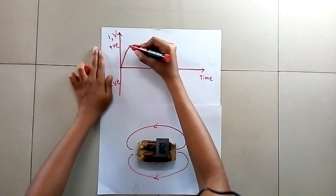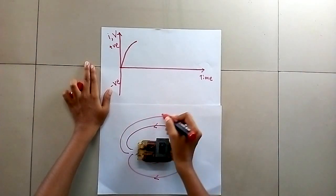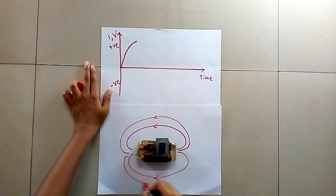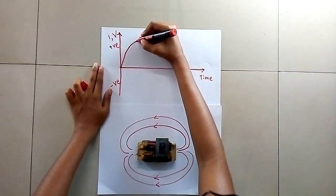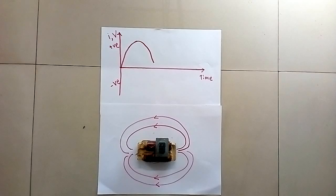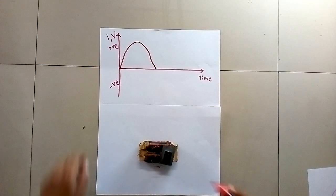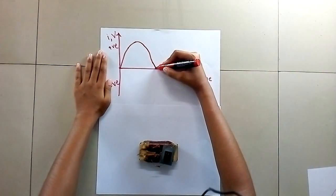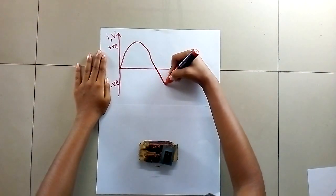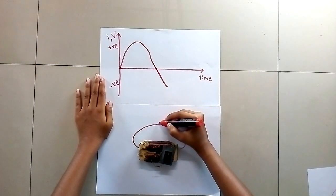Once the voltage reaches its maximum, the magnetic field produced also reaches its maximum size. As the voltage starts to decrease from maximum to zero, the magnetic field also decreases to zero. As the AC voltage reverses its polarity and increases in the opposite direction, the magnetic field produced by the ballast also increases in the opposite direction.